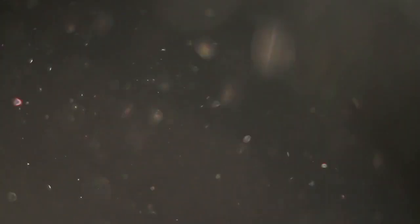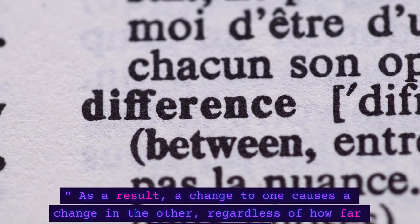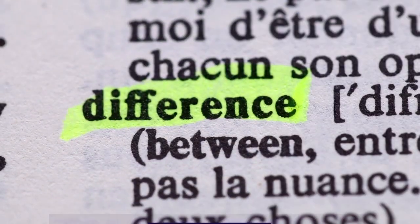Two light particles, or photons, can become inextricably linked to one another through quantum entanglement, the strange connection between two distant particles that Albert Einstein objected to as spooky action at a distance. As a result, a change to one causes a change in the other, regardless of how far apart they are.